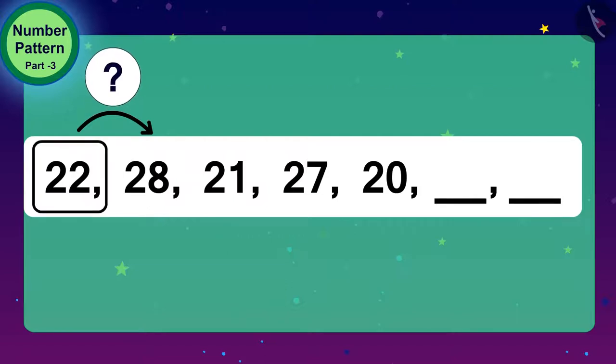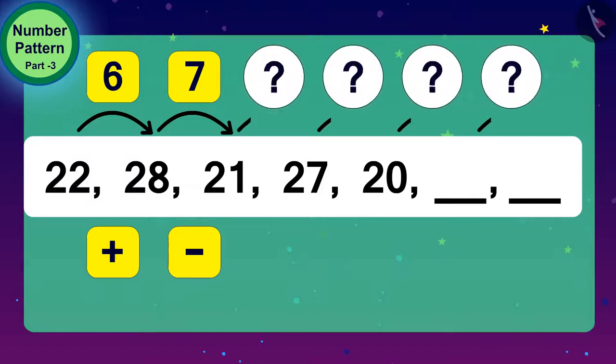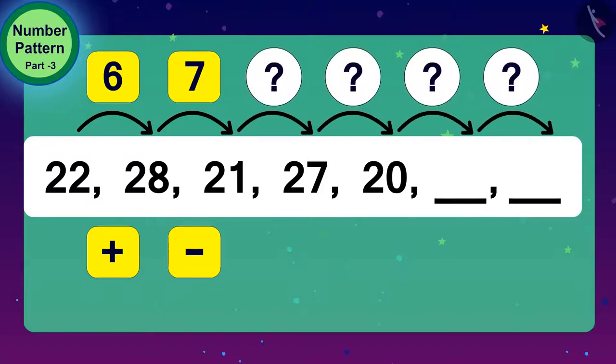Exactly! By adding 6. Yes! And what do we have to do to get 21 from 28? Yes! We have to subtract 7 digits from 28. Have you got any rules so far? No! No problem! Let us look at the next number.